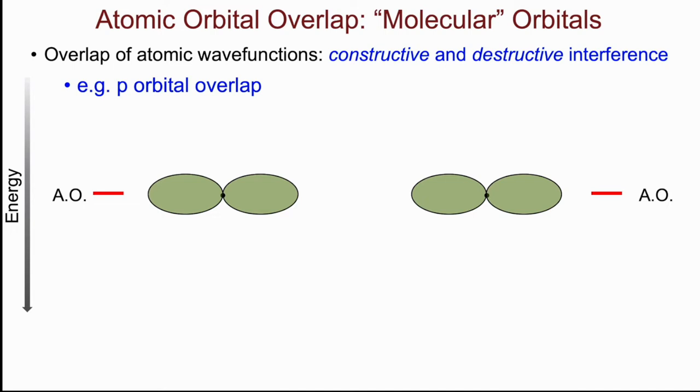So here's my two generic p-type orbitals on each atom, and if there is no overlap, in this situation as shown, then the resultant energy is just the same.